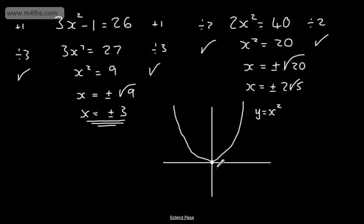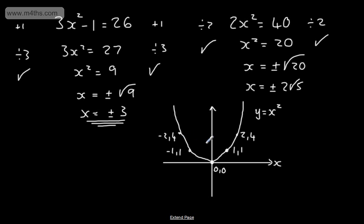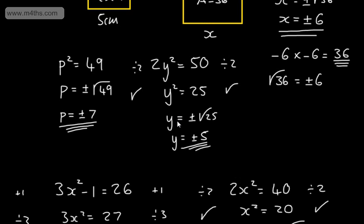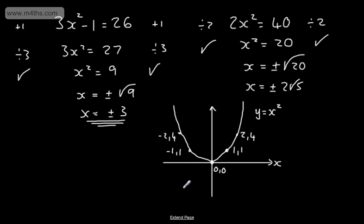At the origin (0, 0), if x is 1, then 1 squared gives 1. We also have the point negative 1: negative 1 squared also gives 1. If we take x equals 2, we get 4, and if we take negative 2 and square it, we also get positive 4. So we can see the graph is symmetric about the y-axis, which is why squaring always gives a plus or minus answer.